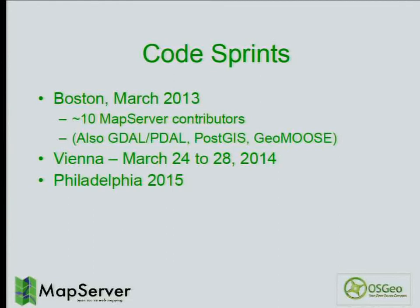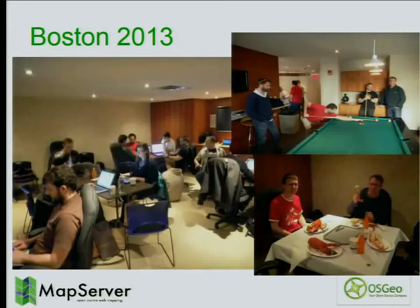On code sprints: we were involved in the North American Code Sprint in March this year with about 10 MapServer developers. That sprint also involves GDAL, MapGuide, PostGIS, GeoMoose, and several other projects. Our next sprint is in Vienna, March 24th to 28th. The sprint is so popular we already have volunteers for 2015 — it will be in Philadelphia. There are also talks about a possible combined QGIS and C sprint if a venue large enough can be found in Europe.